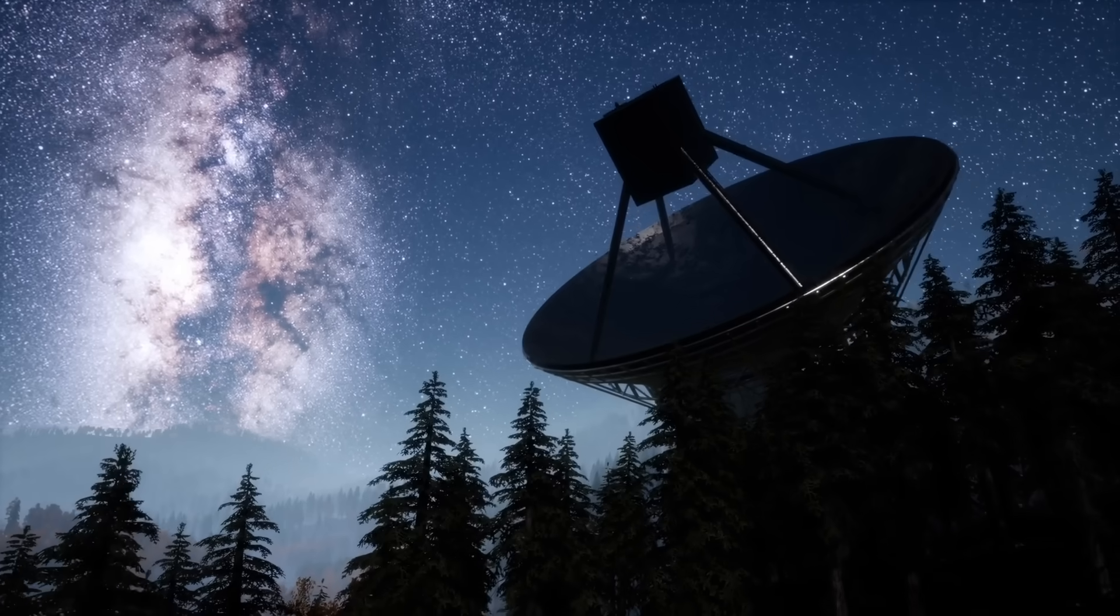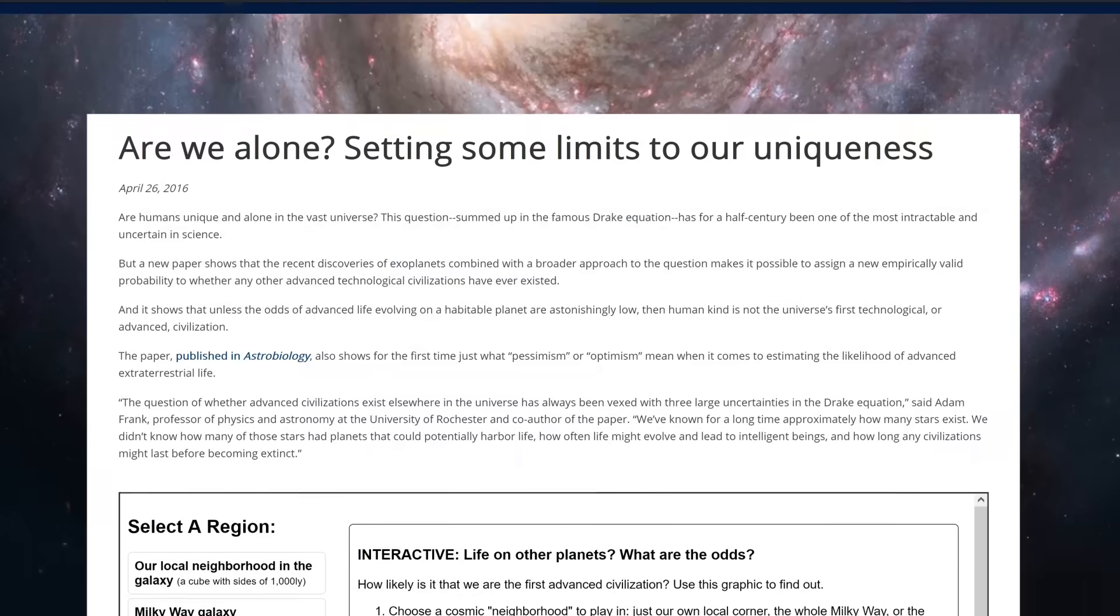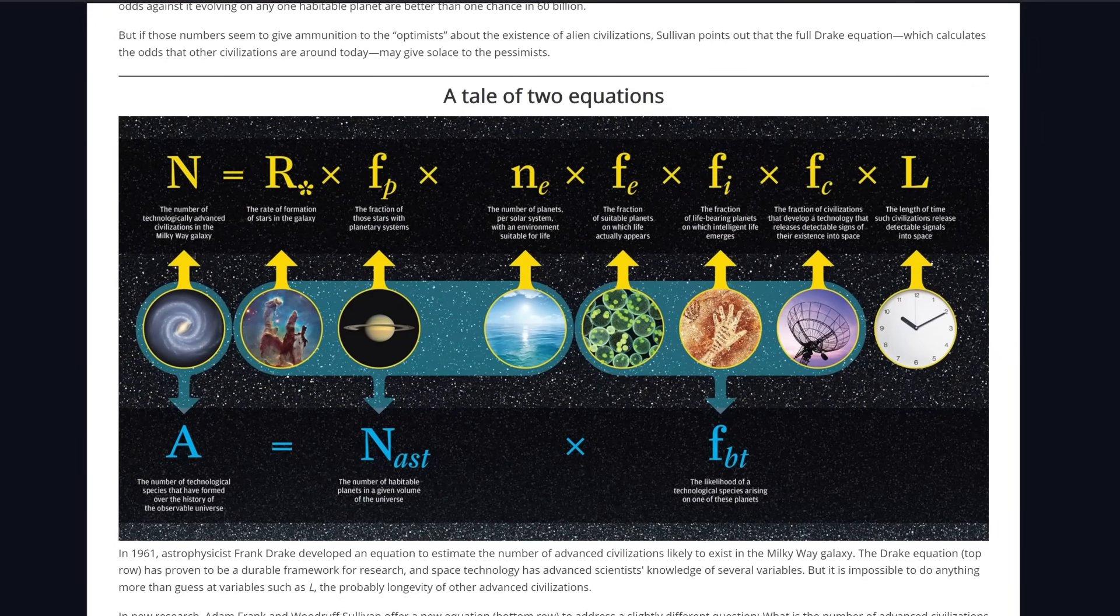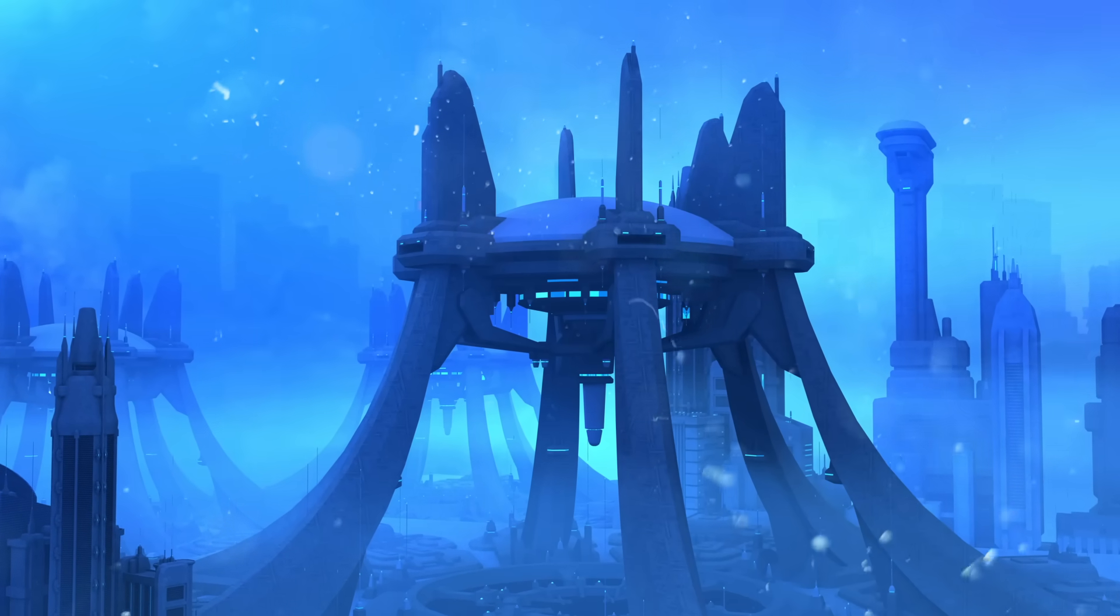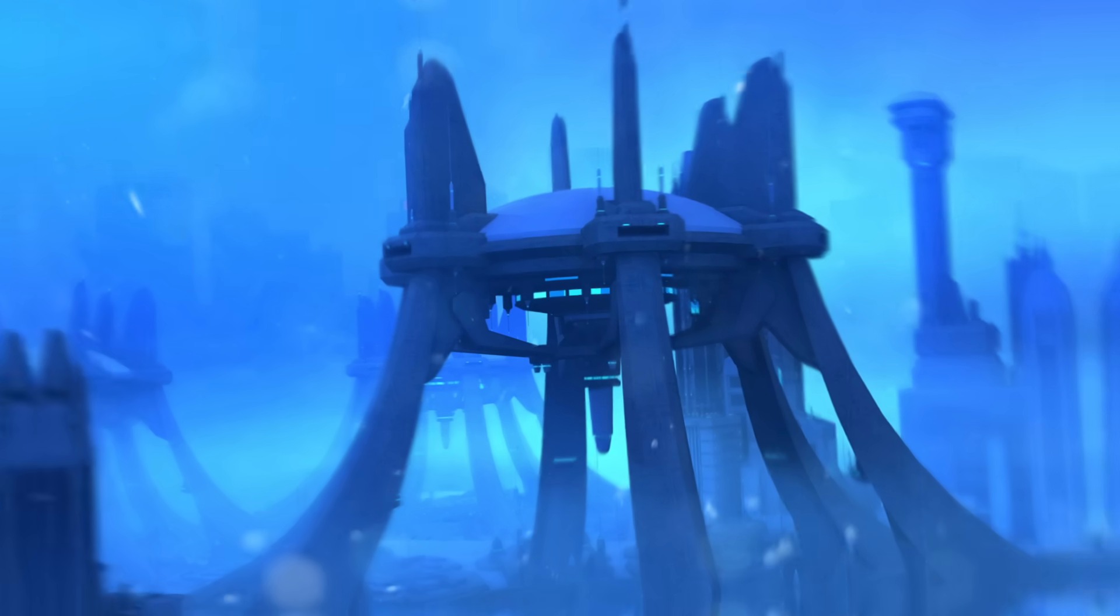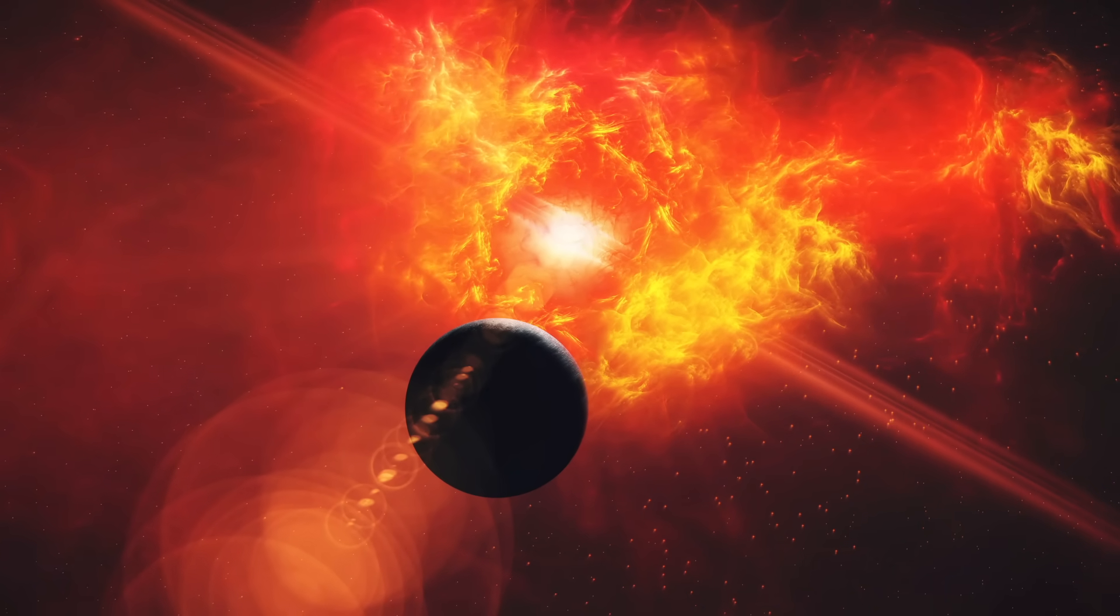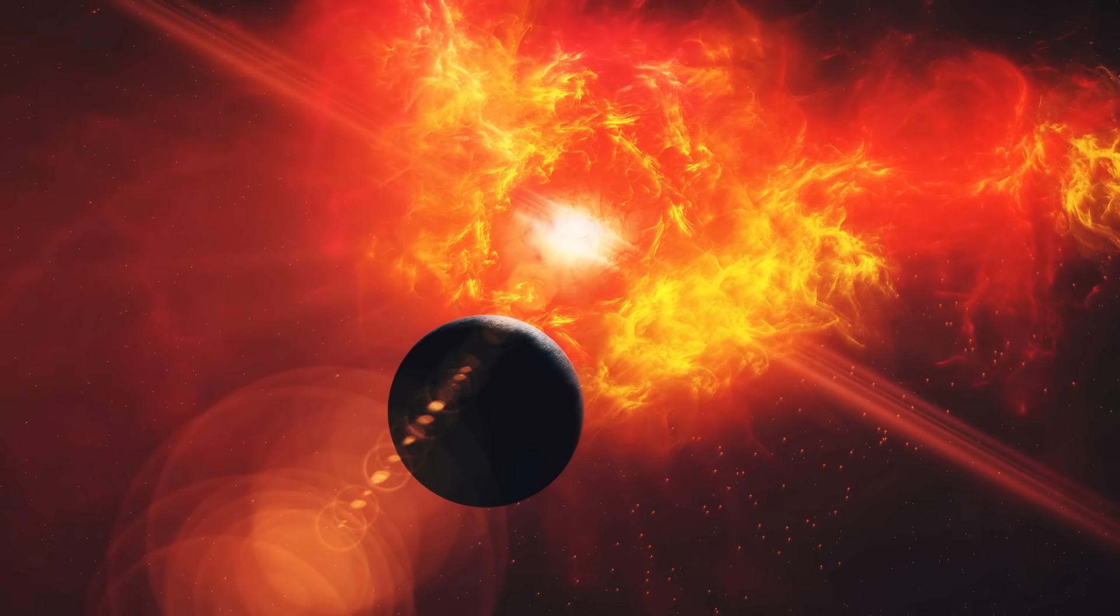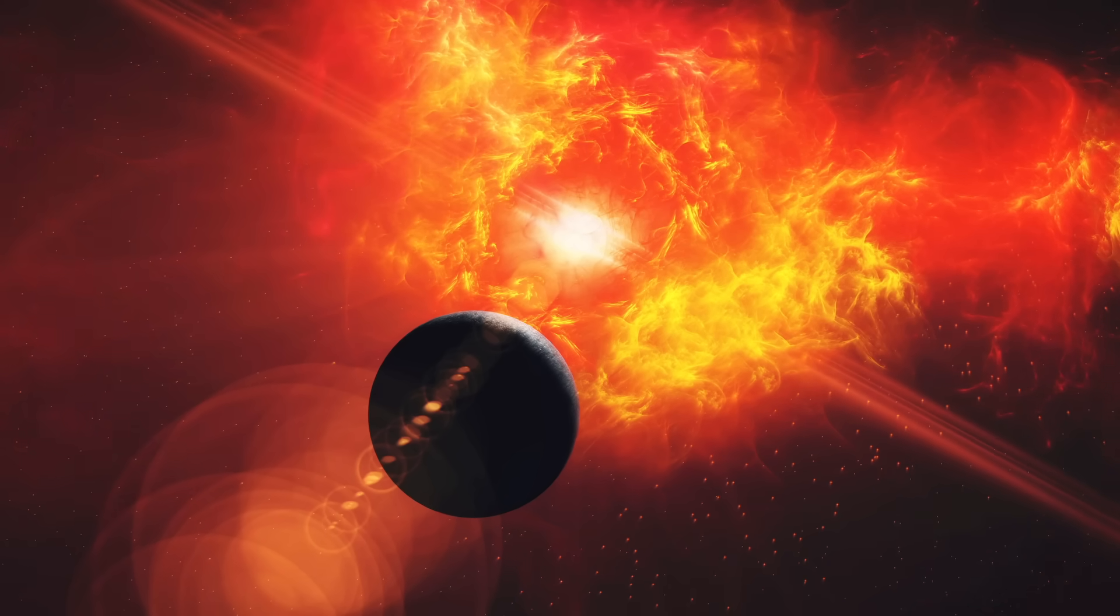But now we have more insights to some of the factors of the Drake Equation. In a paper published in Astrobiology, Adam Frank, professor of physics and astronomy at the University of Rochester and co-author of the paper said, the question of whether advanced civilizations exist elsewhere in the universe has always been vexed with three large uncertainties in the Drake Equation. We've known for a long time approximately how many stars exist. We didn't know how many of those stars had planets that could potentially harbor life, how often life might evolve and lead to intelligent beings, and how long any civilizations might last before becoming extinct.